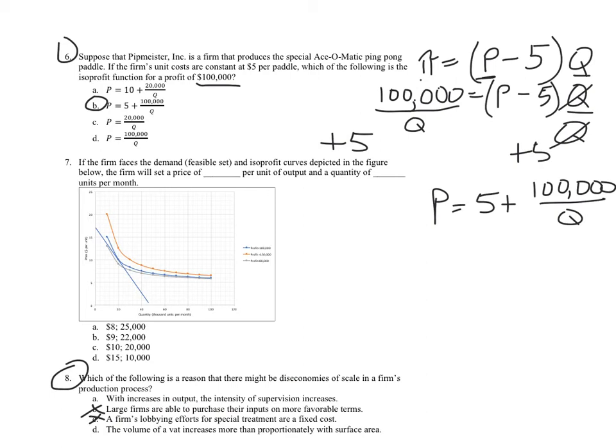Typically, the higher our fixed costs, the more the bigger firms have an advantage. And finally, the volume of a vat increases more than proportionally with surface area. And it turns out that's a big reason for economies of scale. Costs tend to follow surface area, which goes up with the square. It's in terms of square inches. Volume is in cubic inches. And volume goes up as a cubic function. So volume goes up much faster than square inches as you, say, build a bigger pipe or build a bigger vat.